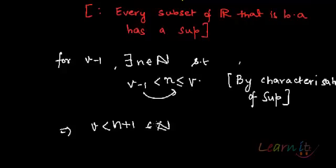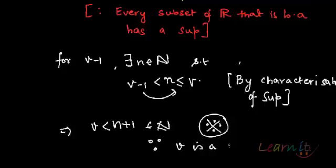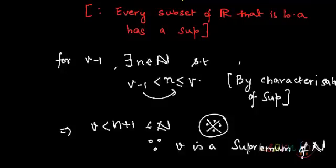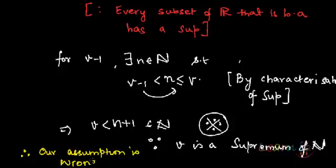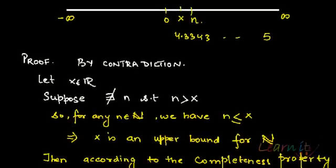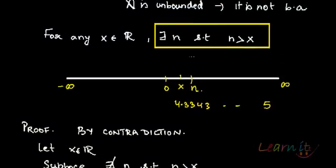So that means if I add 1, v is essentially less than n plus 1, and n plus 1 belongs to ℕ, which is a contradiction because v is a supremum. This gives us a contradiction to what we assumed. So our assumption is wrong, and therefore there does exist a natural number n such that n is always greater than x.